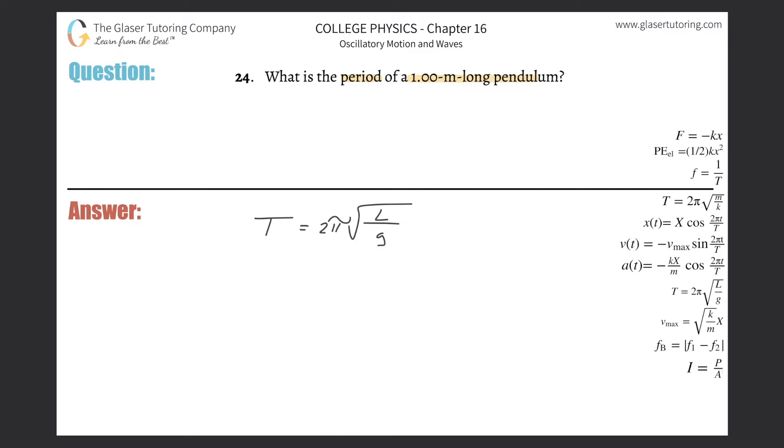So essentially, there's only two variables, period and length. If you know one, you can find the other. So we've got to find the period, and they told us the length.